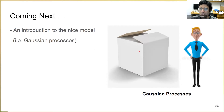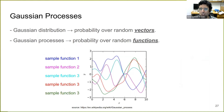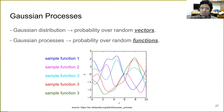Coming next is an introduction to the nice model — Gaussian processes. Gaussian distribution is a way of defining a probability over random vectors. But Gaussian processes are a way of defining probability distributions over random functions. When having a Gaussian distribution, each generated sample is a random vector. But for Gaussian processes, instead of having random vectors, we will have randomly generated functions — sample function one, sample function two — these are samples from our Gaussian processes.